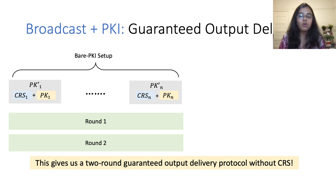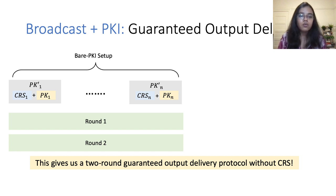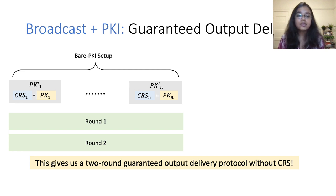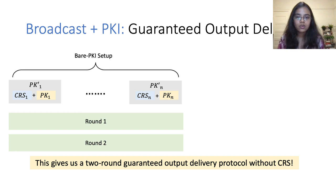While this protocol also implies a protocol with identifiable abort, note that it relies on a special bare PKI setup. In our paper, we present a separate protocol for identifiable abort where the PKI can be instantiated using any public key encryption scheme. Designing a similar guaranteed output delivery protocol where the PKI can be instantiated using any public key encryption scheme remains an interesting open question.